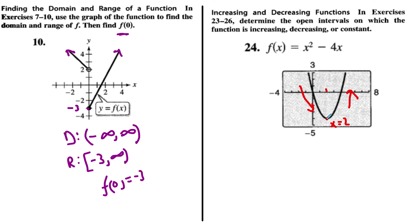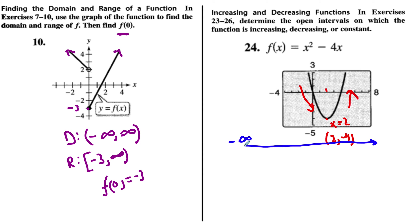We don't necessarily need to know the actual coordinate, but it is (2, negative 4) if you're curious. What we need to think about is starting at negative infinity and heading toward positive infinity. The graph is decreasing from negative infinity all the way up to, but not including, x = 2.